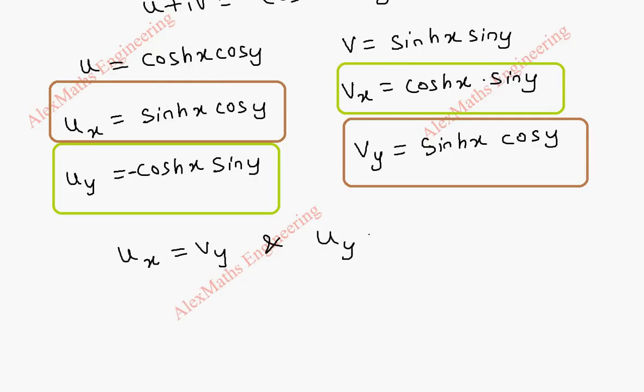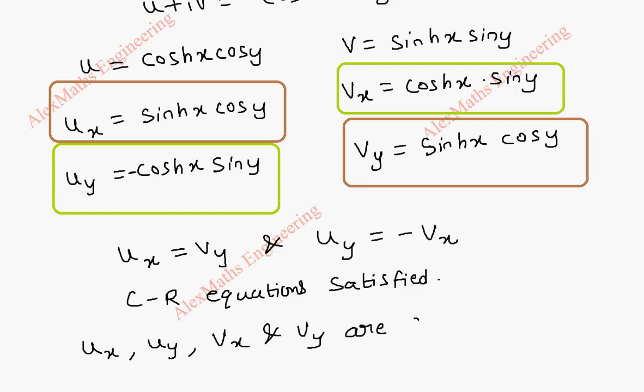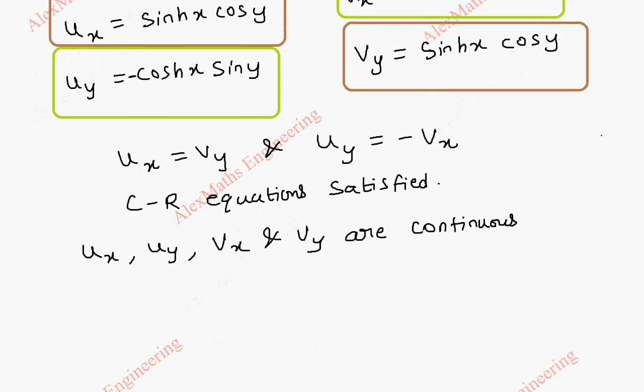So, ux equal to vy. And uy equal to minus vx. So, we can say, CR equations satisfied. CR equations satisfied. And also, ux, uy, vx and vy all are continuous. So, from this, we can say, f of z is analytic.